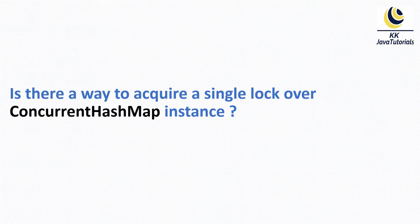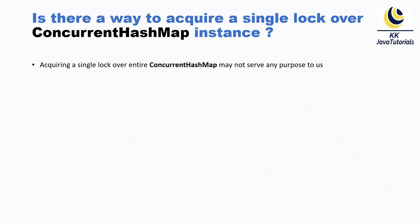So the question is: is there a way to acquire a single lock over a ConcurrentHashMap instance?